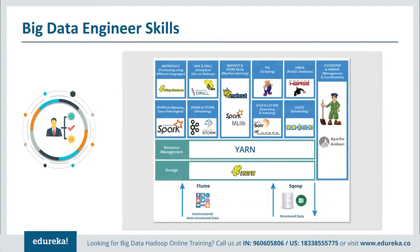Next, we have Flume and Sqoop. Flume is used to import unstructured data to HDFS, and Sqoop is used to import and export structured data from RDBMS. Then there's Zookeeper, which acts as a coordinator among distributed services running in a Hadoop environment, helping with configuration management and service synchronization. Finally, we have Oozie, which is a scheduler that binds multiple logical jobs together and helps accomplish a complete task.